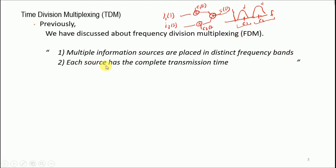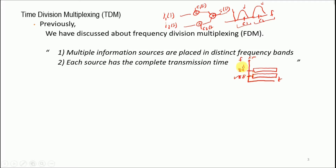Each source has complete transmission time within its band. Plotting time versus frequency, for example in FM broadcasting, 88 MHz is allocated to one station and 89 MHz to another for all time. The frequency is segregated, but a given frequency band is assigned exclusively to one specific station. FDM finds application in both amplitude modulation and frequency modulation.